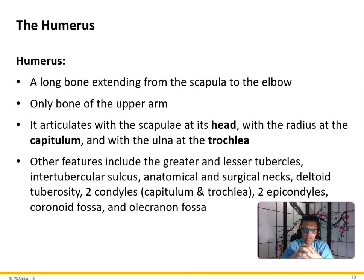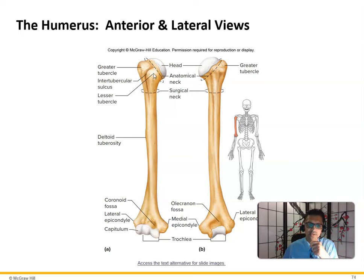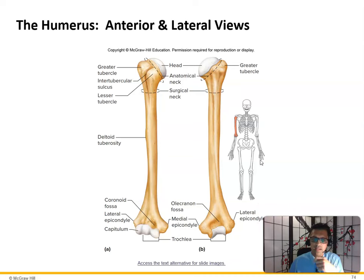Other features of the humerus include the greater and lesser tubercles, intertubercular sulcus, anatomical and surgical necks, deltoid tuberosity, two condyles, capitulum, two epicondyles, coronoid fossa, and olecranon fossa. The anatomical neck is more for anatomical reference and attachment sites, while the surgical neck is where fractures more commonly occur — it's clinically significant because surgeries happen there for proximal fractures of the humerus head. Fractures at the anatomical neck are rare; fractures at the surgical neck are very common, hence the name.